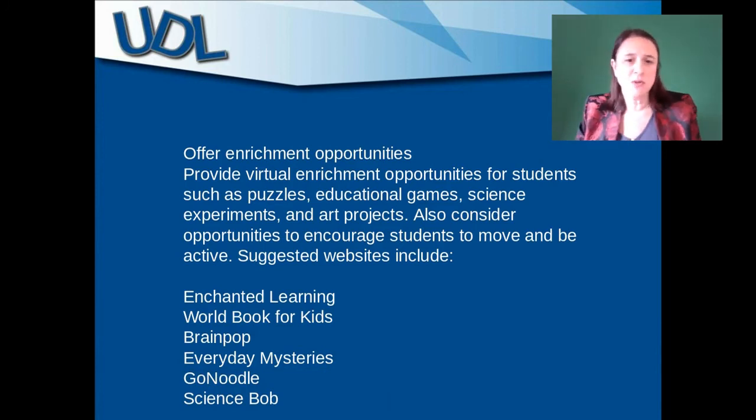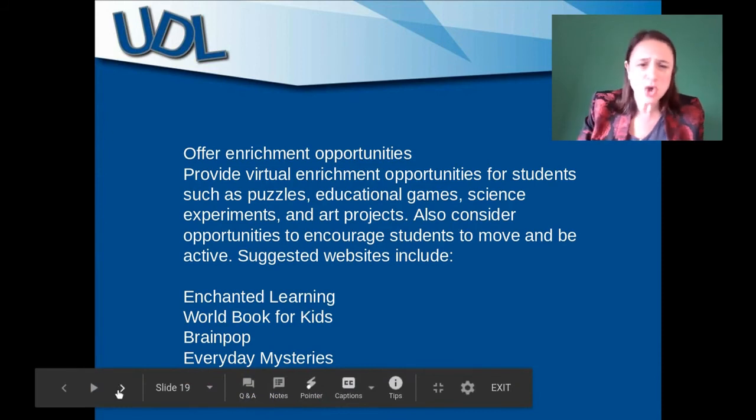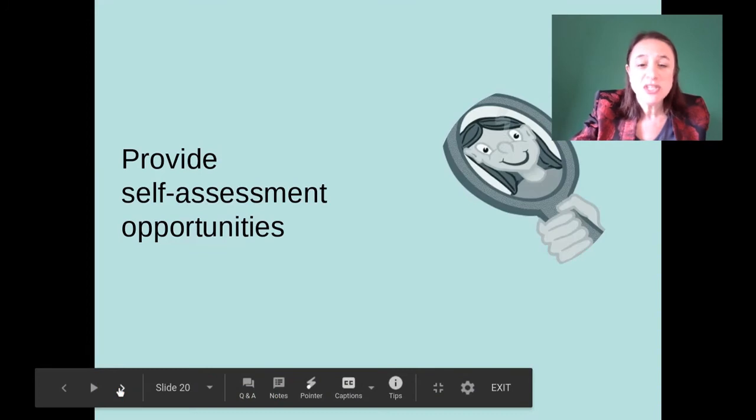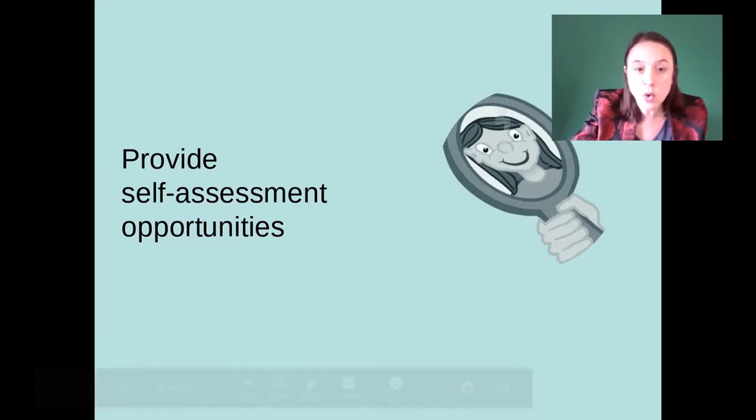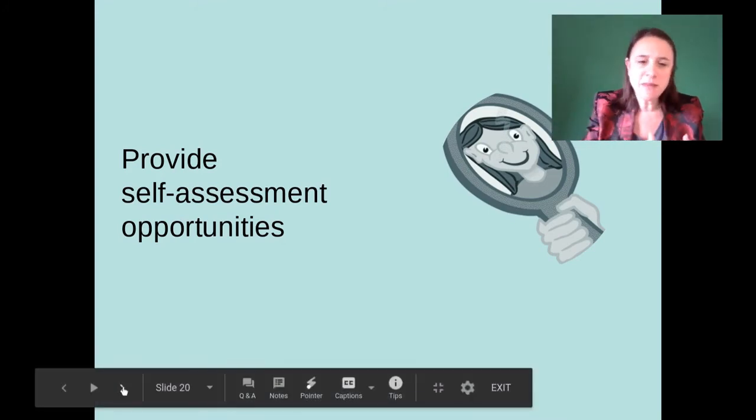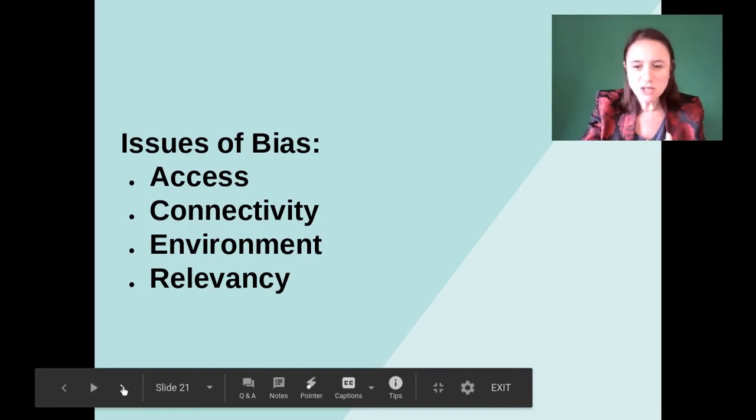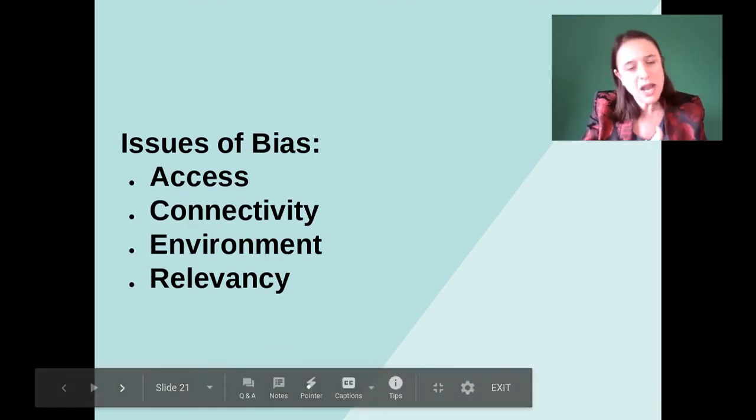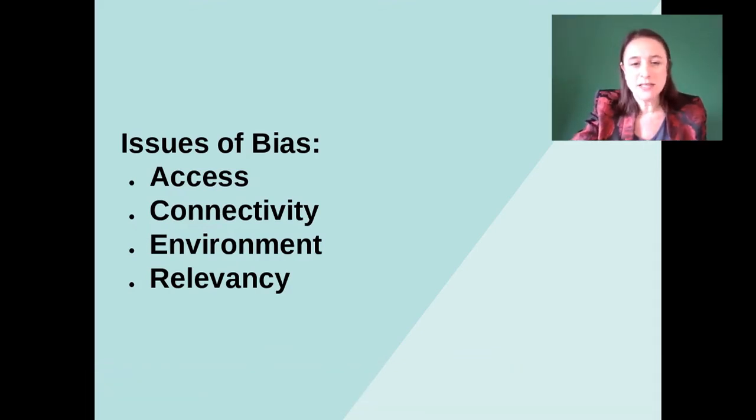We want to have enrichment opportunities, things that really get them involved. Puzzles, games, experiments, art projects. These are some ideas we can do to make sure children are really interacting and involved and enjoying what we're teaching. Otherwise, they're never going to learn. We want to make sure they have time to self-assess. Those targets are so important so they can look back and say, am I meeting the rubric? Am I achieving the goals of this module? Am I understanding what's being taught in this classroom?